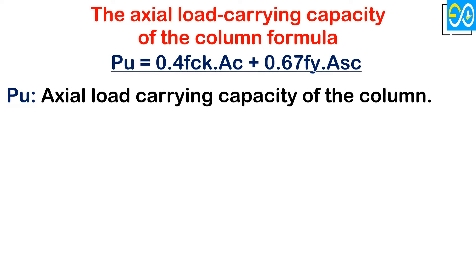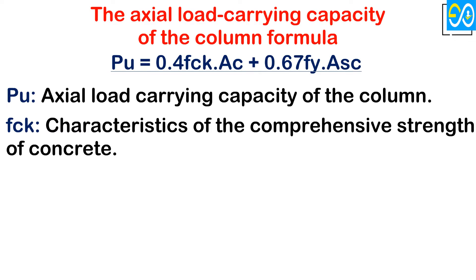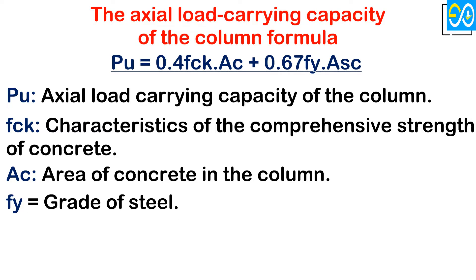Where Pu equals ultimate axial load-carrying capacity of the column, fck equals characteristics of the compressive strength of concrete, Ac equals area of concrete in the column, and Asc equals area of steel in the column.